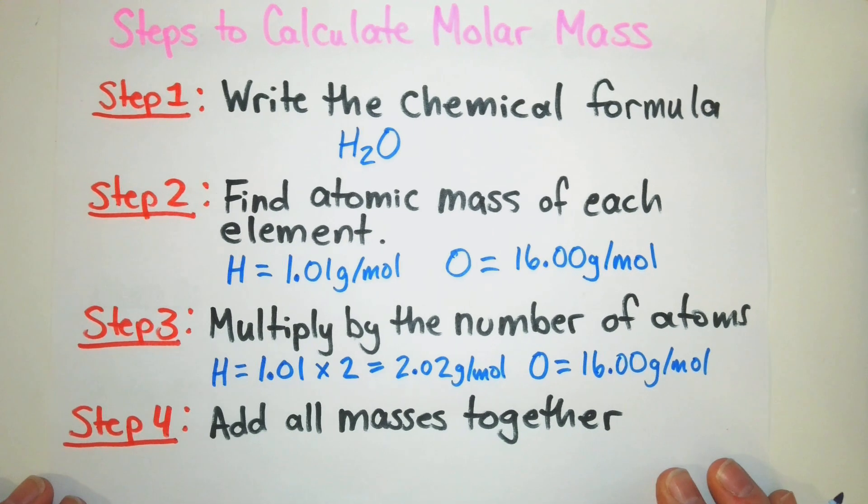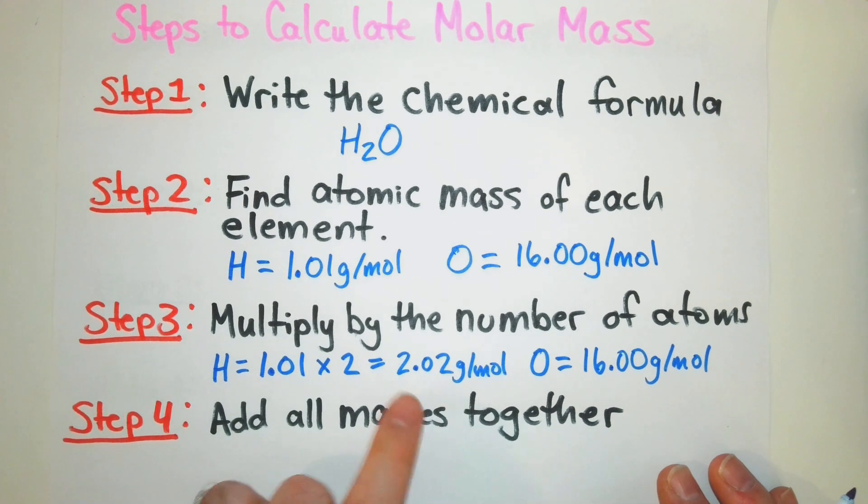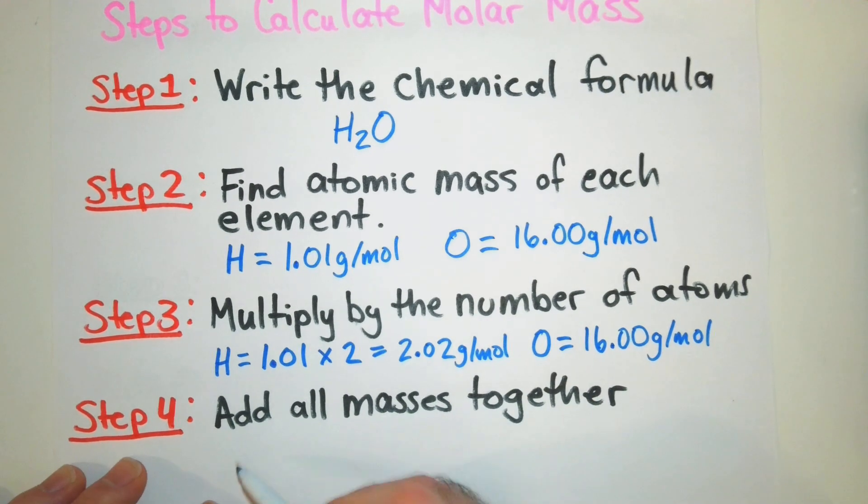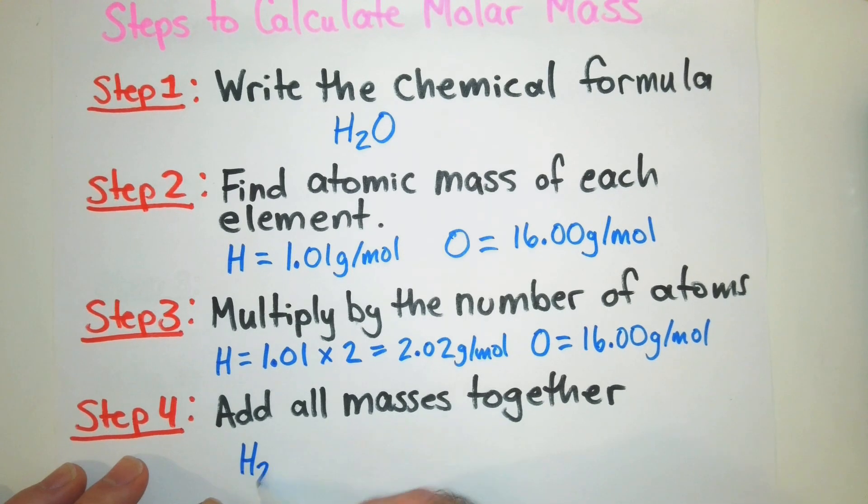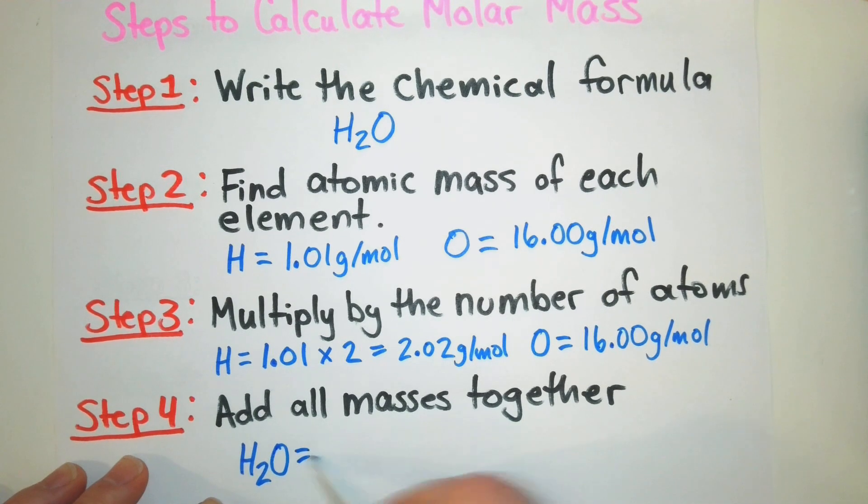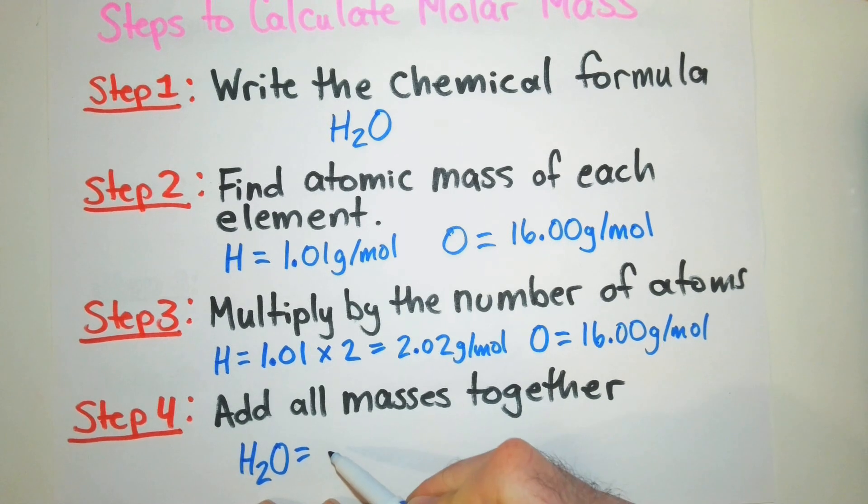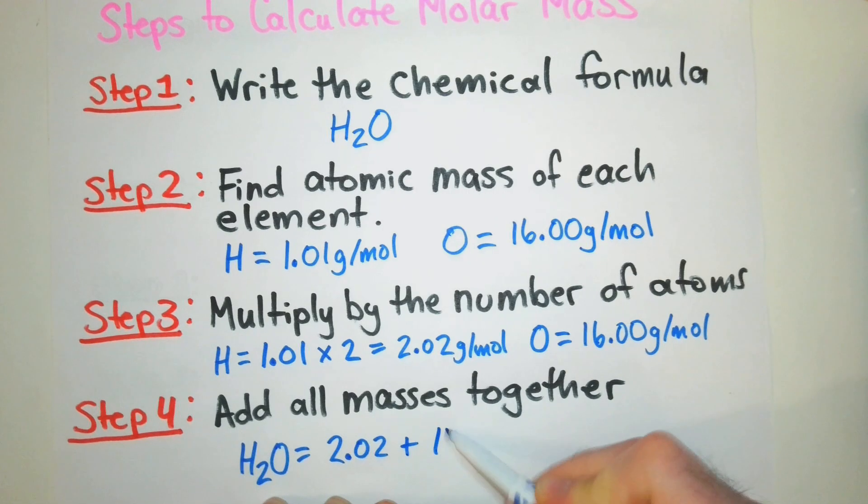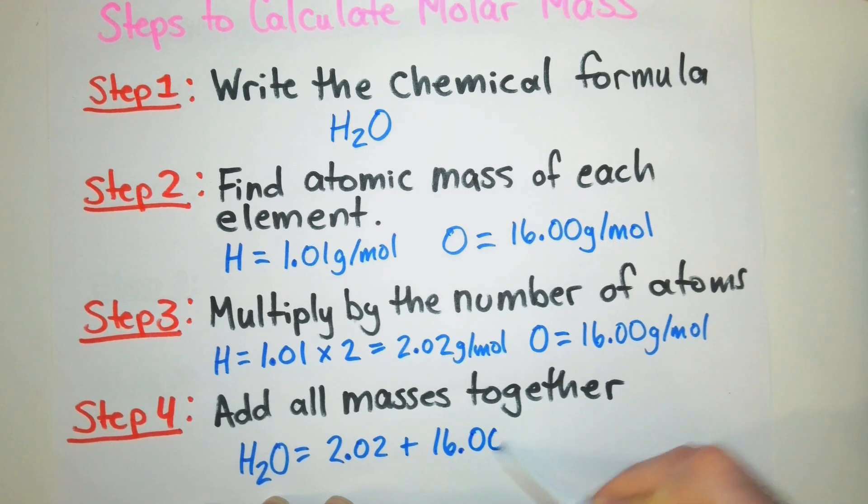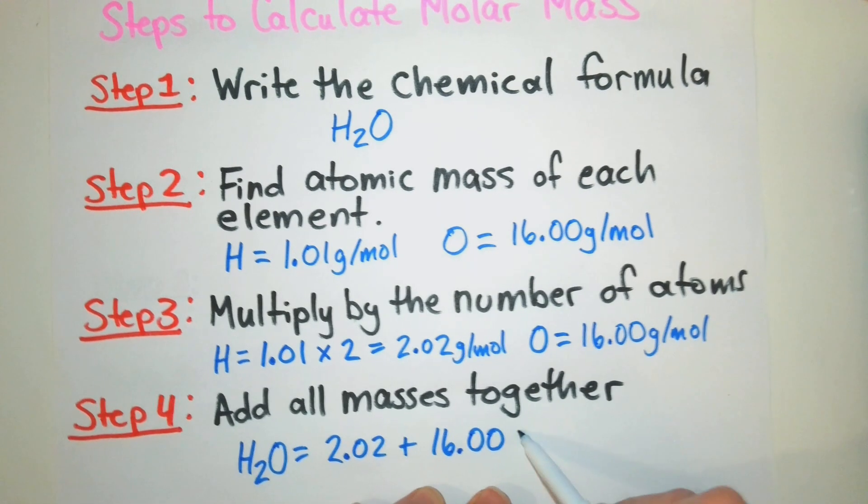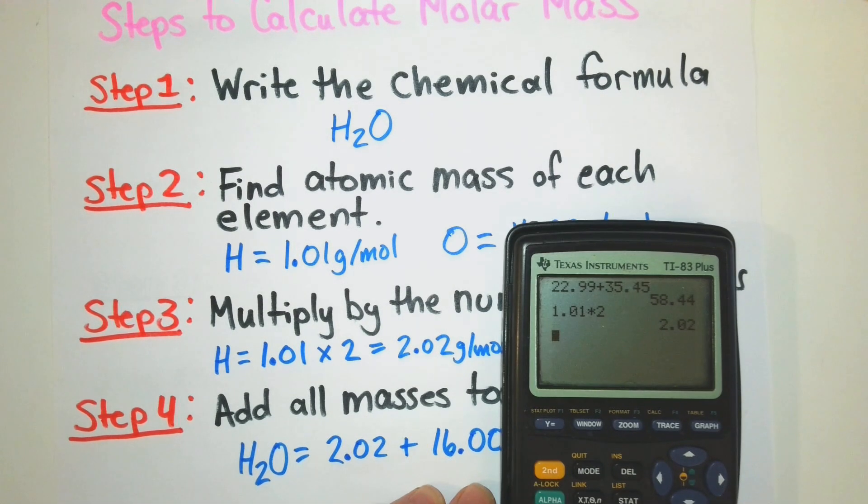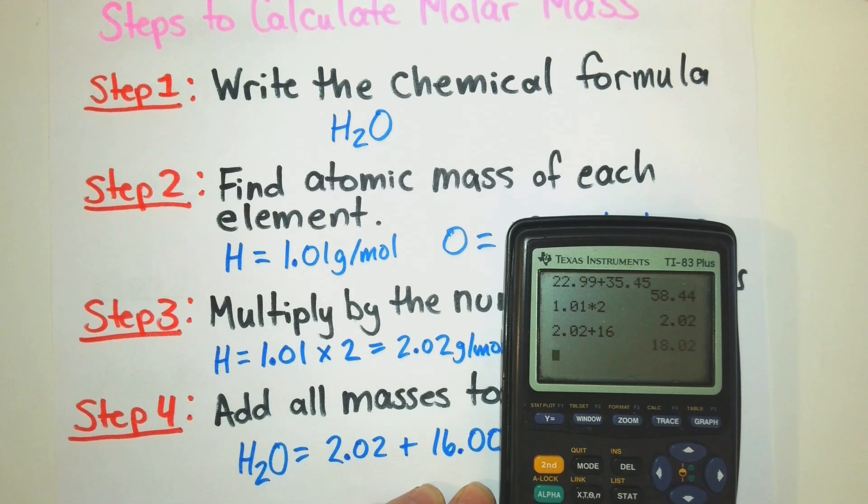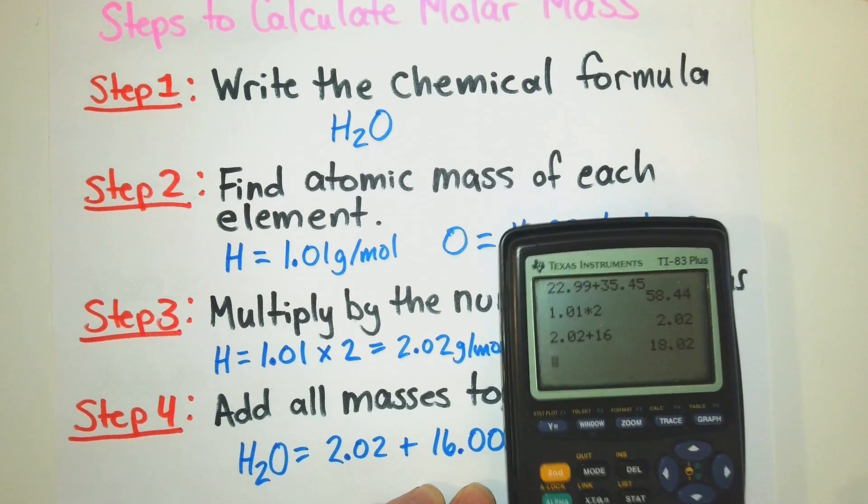Now what we're going to do is we're going to add up all of these masses together. We're going to add up our 2.02 and our 16.00. And so that'll be the molar mass of our water molecule. So we have our 2.02 plus our 16.00. And that's going to give us 2.02 plus 16.00 equals 18.02 grams per mole.